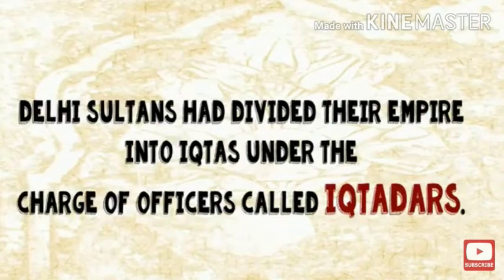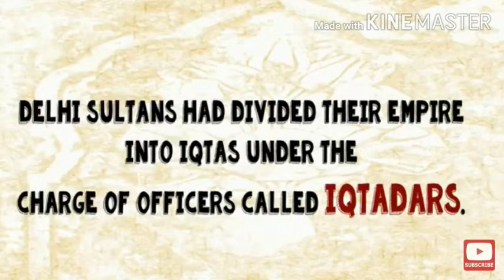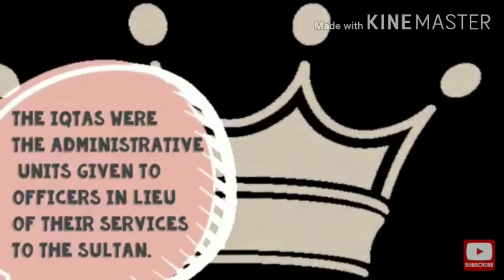Delhi Sultans had divided their empire into Iqtas under the charge of officers called Iqtadars. These Iqtadars were generally members of the royal family or nobles. The Iqtas were administrative units given to officers in lieu of their services to the Sultan.